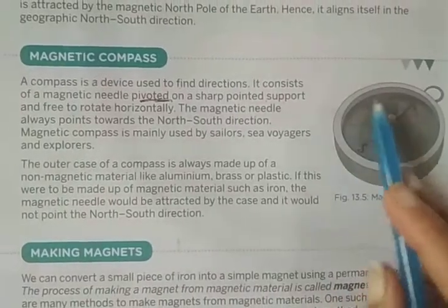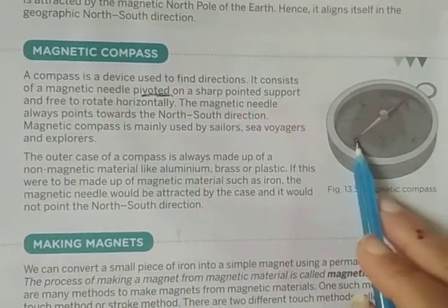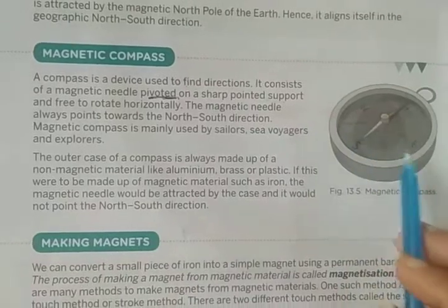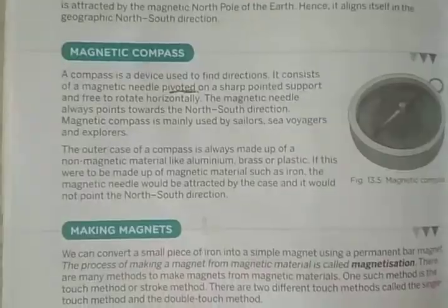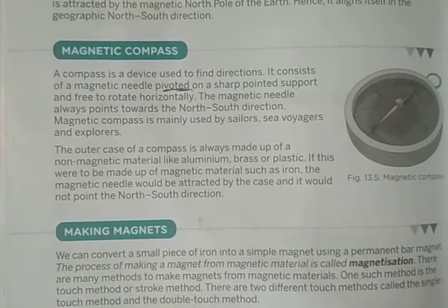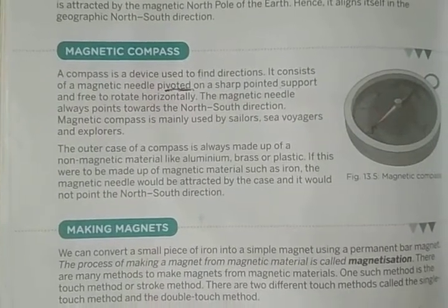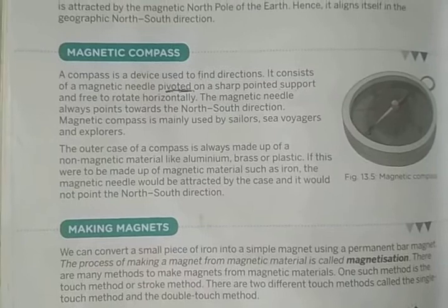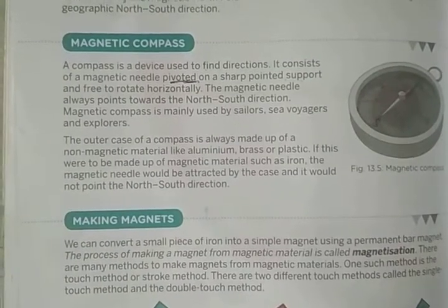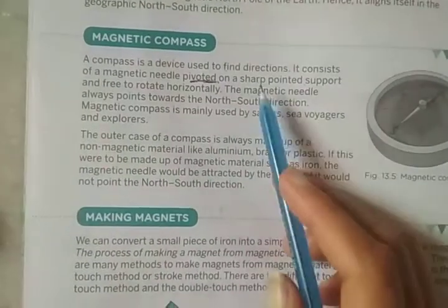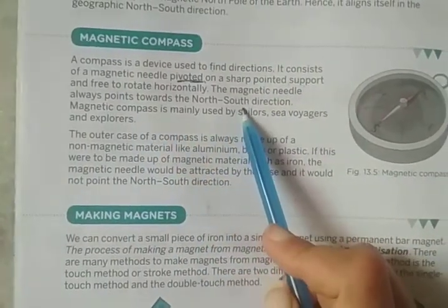As we can see on this magnetic compass, directions are written: south, north, northeast, and west. When the needle is at rest, it will always be in the south and north direction. When we take it in another direction, the needle starts to deflect. The magnetic needle always points towards the north-south direction.